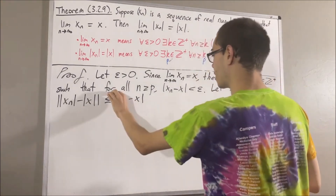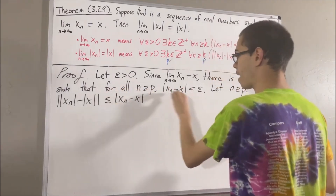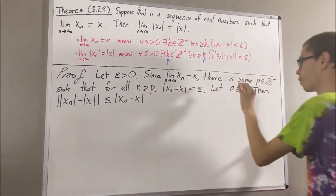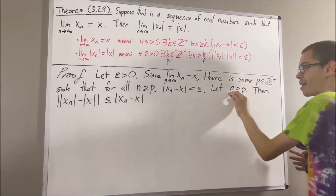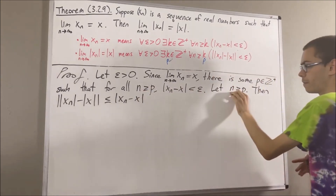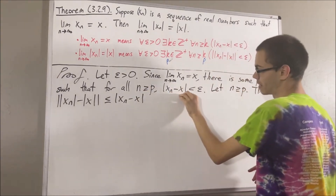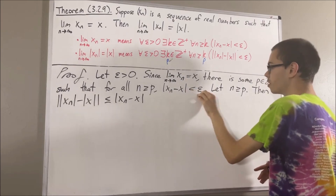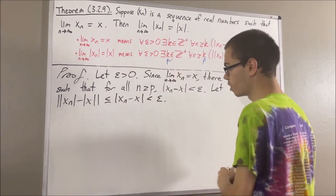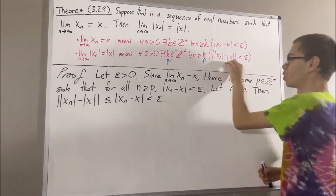Now let's also remember that this statement — that the absolute value of xn minus x is less than epsilon — is true, and it works for every positive integer greater than or equal to p. So it must work for the positive integer n that we have here. Taking n to be the n we have here, we have that the absolute value of xn minus x is less than epsilon. So this quantity is less than epsilon, and we have shown what we wanted to show.